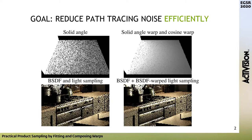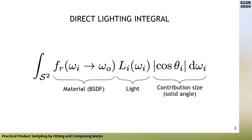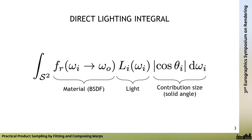The goal of this work is to increase the efficiency of path tracing by reducing noise. Here's a teaser of results: on the left are images rendered with standard practice techniques, and on the right the same images with significantly reduced noise rendered with just one sample per pixel. The approach is for sampling the light — specifically the direct lighting integral, which is the product of the material scattering function, the incoming light, and the cosine or solid angle term. We solve this integral using Monte Carlo estimation by evaluating random samples and averaging results.